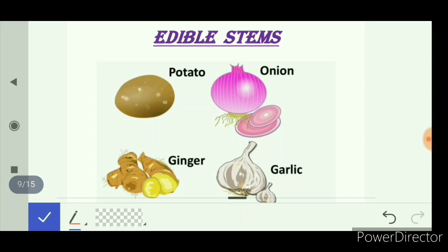Next are edible stems. Examples are potato, onion, ginger, and garlic. Stems of some plants are also eaten as food. In some plants, stems are below the ground — they are called underground stems. Potato, onion, ginger, and garlic are underground stems that we consume as food.